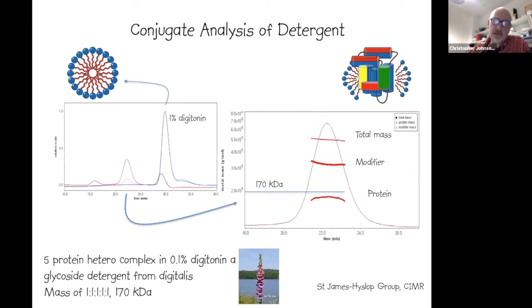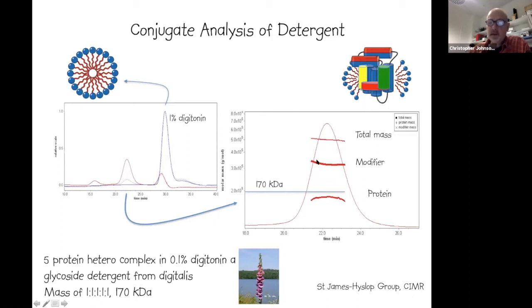Another conjugate analysis example: a hexameric complex expected to be ~170 kDa was studied. The observed total mass was ~550 kDa due to bound detergent digitonin. Conjugate analysis was able to determine the protein complex mass with reasonable accuracy, showing that the majority of the observed mass was detergent conjugated to the protein.